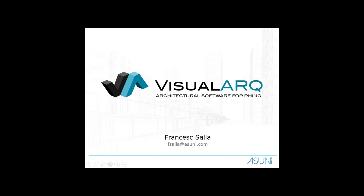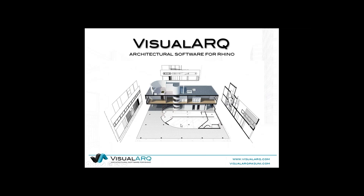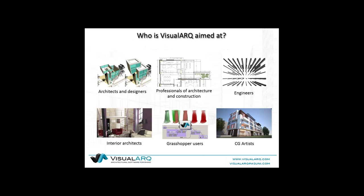VisualArc is a software that works on top of Rhino, and it's aimed to improve the process of working with architectural projects inside Rhino. The idea is that from the 3D model, you can create all the 2D drawings — sections, plans, etc. VisualArc adds BIM features to Rhino, so from one model, from the 3D geometry, you can obtain all the 2D documentation which is attached to the 3D model. VisualArc is aimed at architects, designers, professionals of architecture, Rhino users, engineers, interior architects, and Grasshopper users, as we'll see later on.